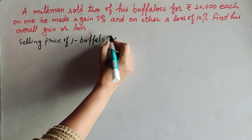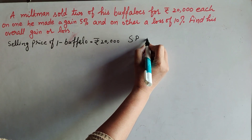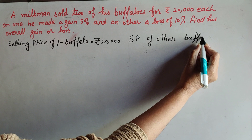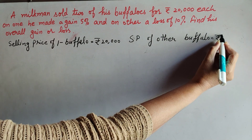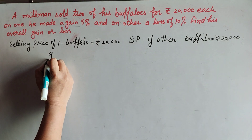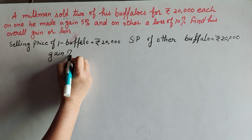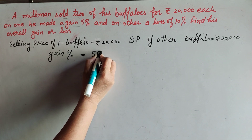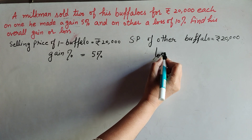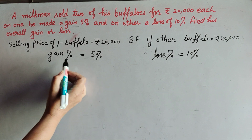The selling price of one buffalo is equal to rupees 20,000. Since each buffalo is sold for rupees 20,000, the selling price of the other buffalo is also equal to rupees 20,000. The gain percentage on one buffalo is equal to 5%, and on the other buffalo he gets a loss — loss percentage is equal to 10%.